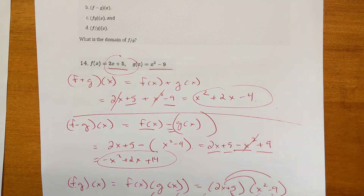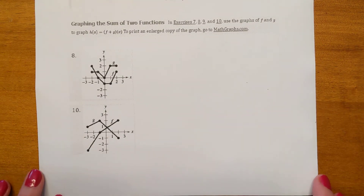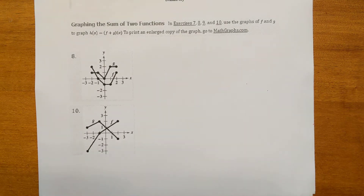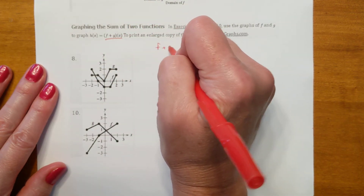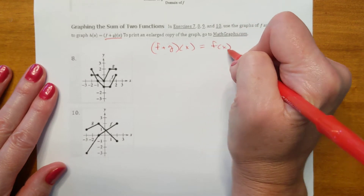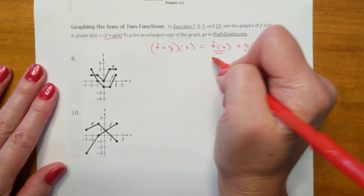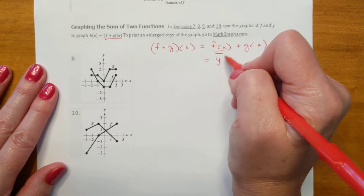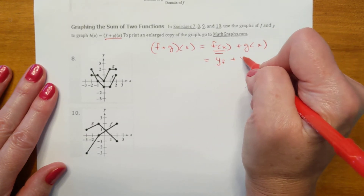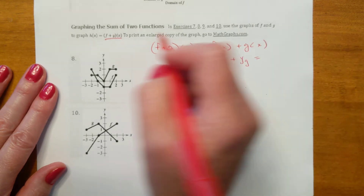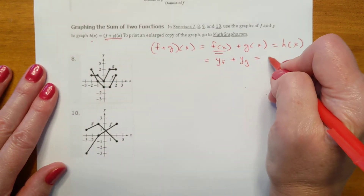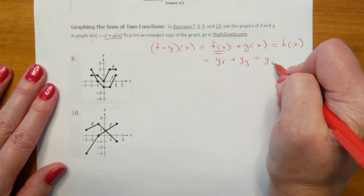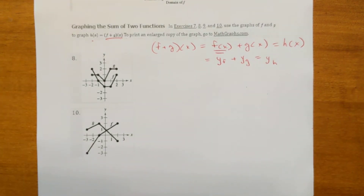Going back a page — graphing the sum of two functions. They're asking you to add f plus g of x, which means adding f(x) plus g(x). Remember f(x) means y. So you find the y of f plus the y of g to get the new function h(x). That equals the new function h(x), giving you the new y value.